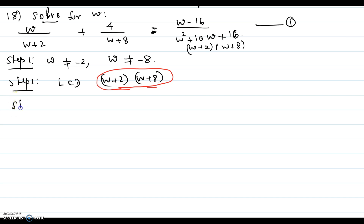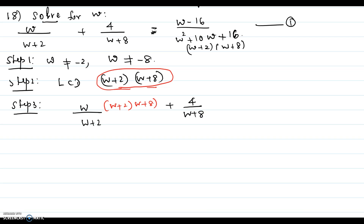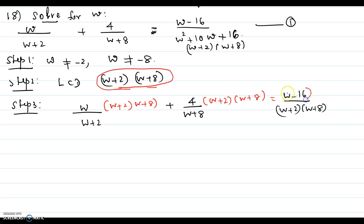For step 3, you multiply every term on the left-hand side and the right-hand side of the equation by the LCD, which is w plus 2 times w plus 8. So we have: w over w plus 2, multiplied by w plus 2 times w plus 8, plus 4 over w plus 8, multiplied by w plus 2 times w plus 8, equals w minus 16 over w plus 2 times w plus 8, multiplied by the LCD, which is w plus 2 times w plus 8.